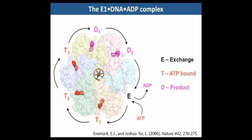In answering these questions, we were helped greatly by the structure of the papillomavirus E1 helicase bound to DNA and ADP, solved by Eric Ennemark and Leemor Joshua-Tor. This asymmetric complex allowed the visualization of six steps in a 3' to 5' AAA-plus hexameric helicase catalytic cycle.